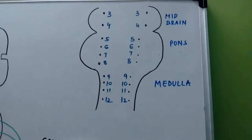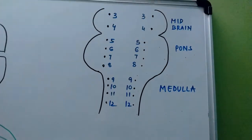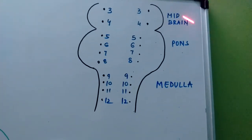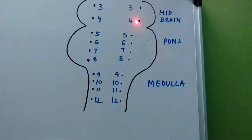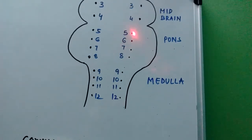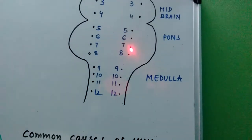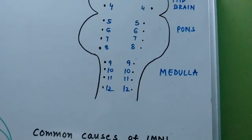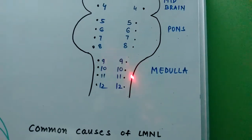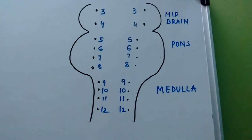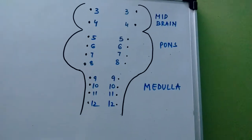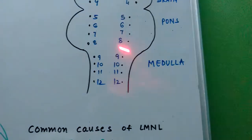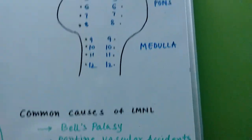As an additional point about cranial nerves: cranial nerves 3 and 4 come from the midbrain. Cranial nerves 5, 6, 7, and 8 — trigeminal, abducens, facial, and auditory — come from the pons. Cranial nerves 9, 10, 11, and 12 — glossopharyngeal, vagus, spinal accessory, and hypoglossal — come from the medulla. So the 7th cranial nerve nucleus, the facial nerve nucleus, is present in the pons.